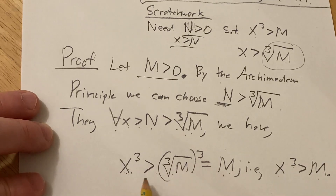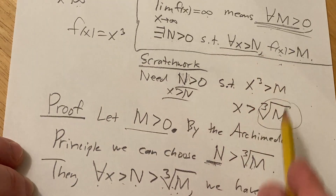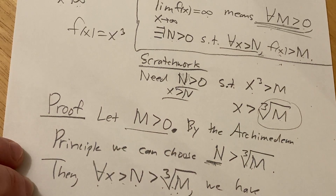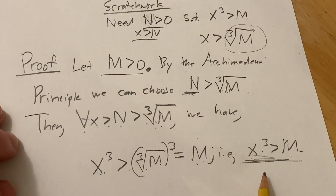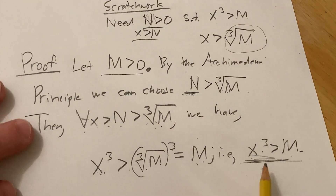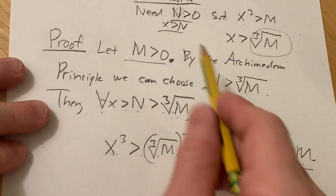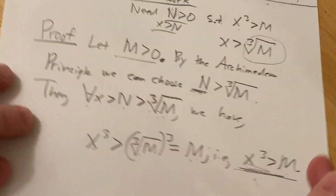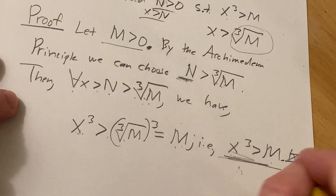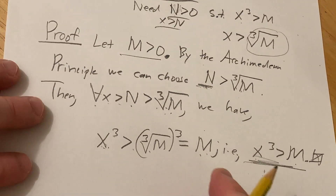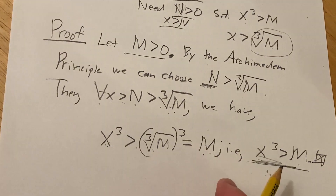And that completes the proof — that's the f of x bigger than m part, which satisfies the definition. So we let m be greater than zero, we found a number n, and showed x cubed is bigger than m. So that completes the proof. Not really a difficult proof — it's just all about following the structure.